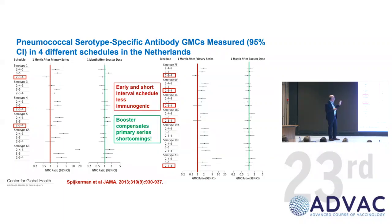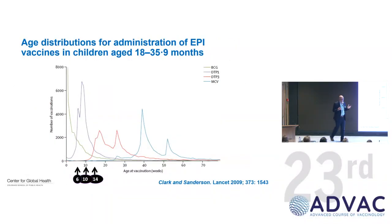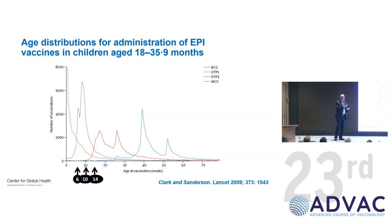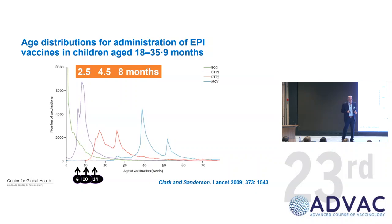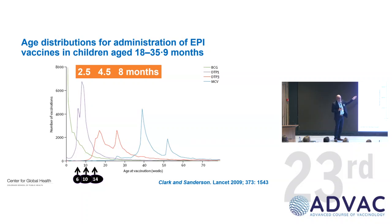You might ask: we introduced the schedule in Africa and Southeast Asia at 6-10-14 and we've seen disease coming down. Why are you saying the schedule doesn't work? The truth is that when people have looked at when doses are actually received, they are not getting it at 6-10-14. On average, they are getting it at 2.5, 4.5, and 8 months. That's reality. In practice, the schedule is behaving like a 2-5-8-month schedule rather than 6-10-14.